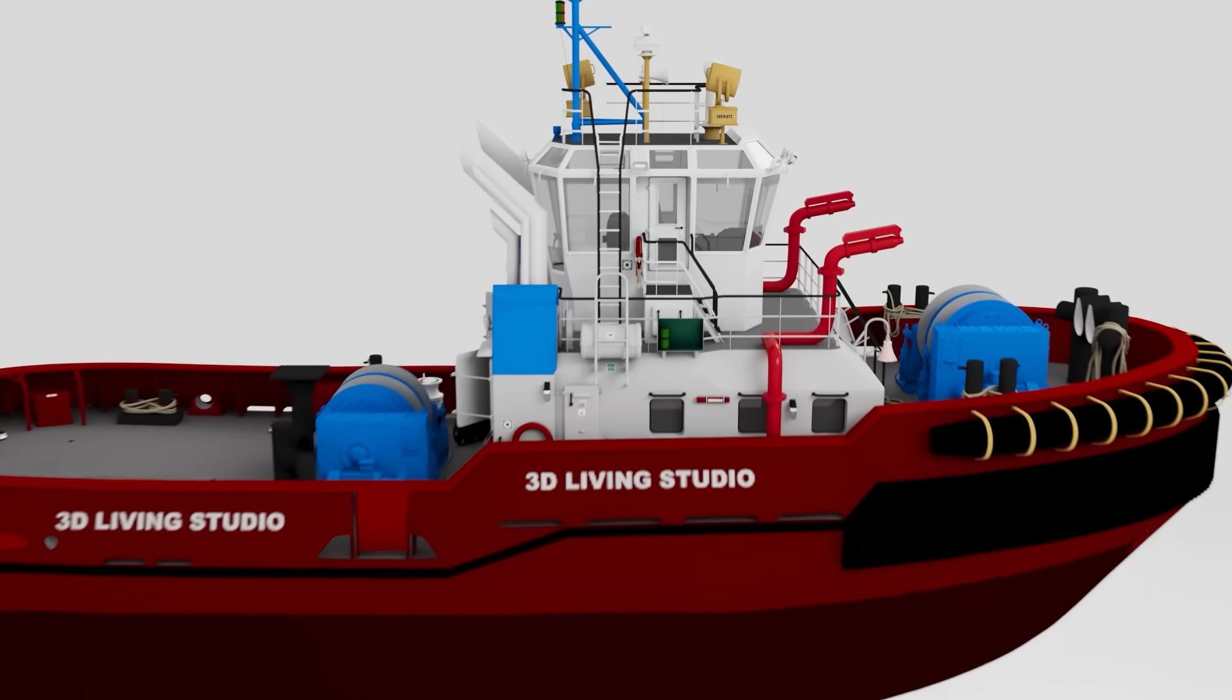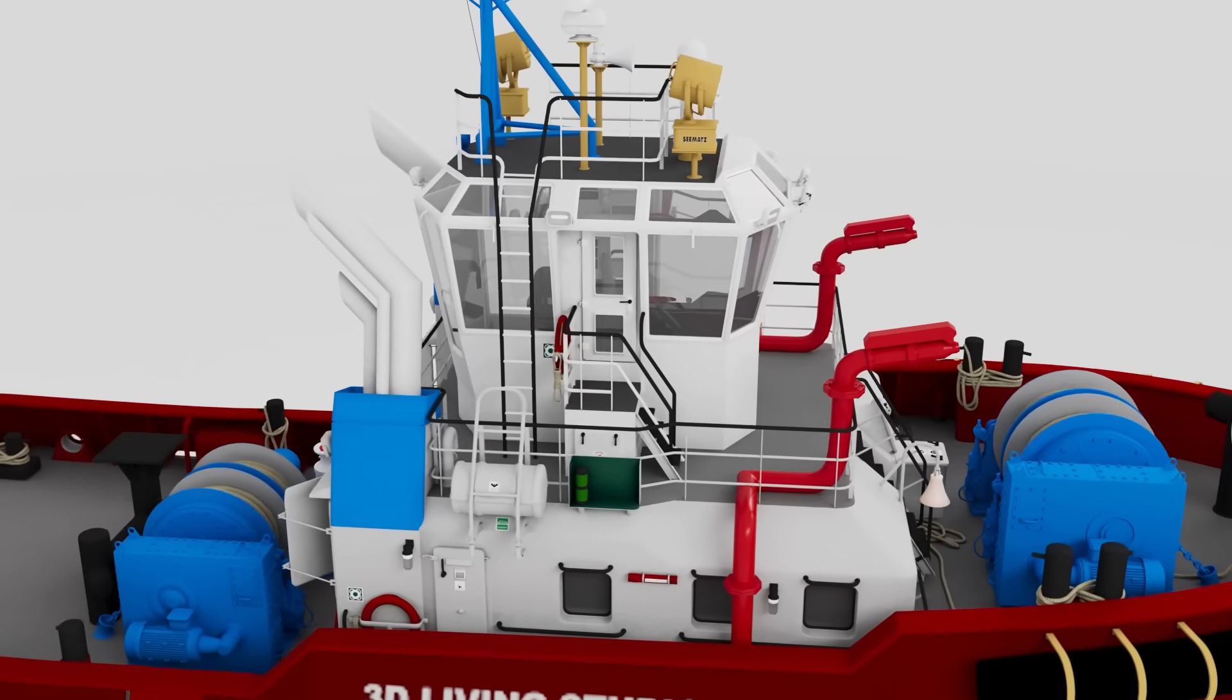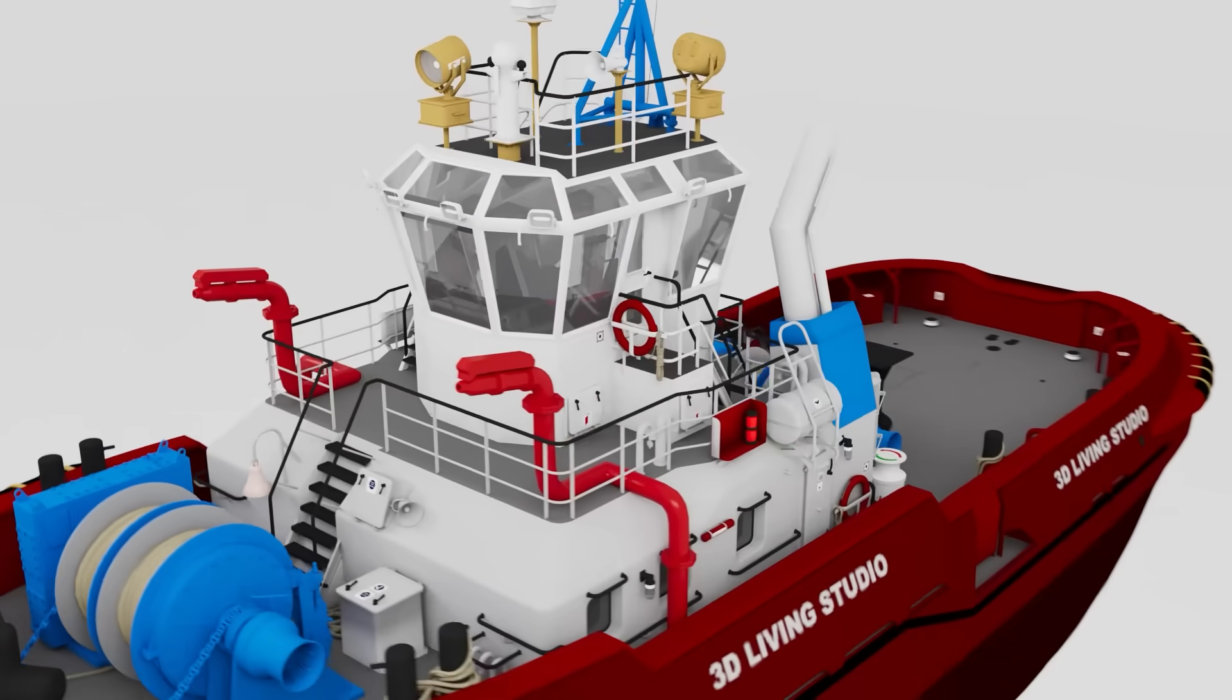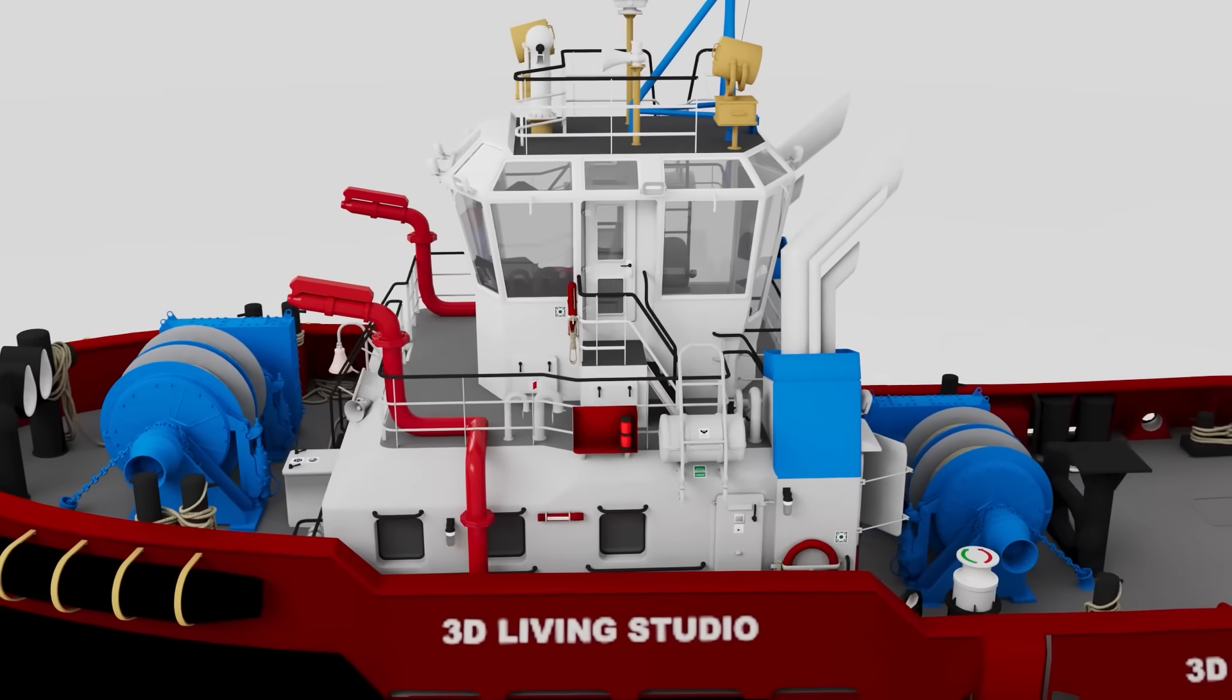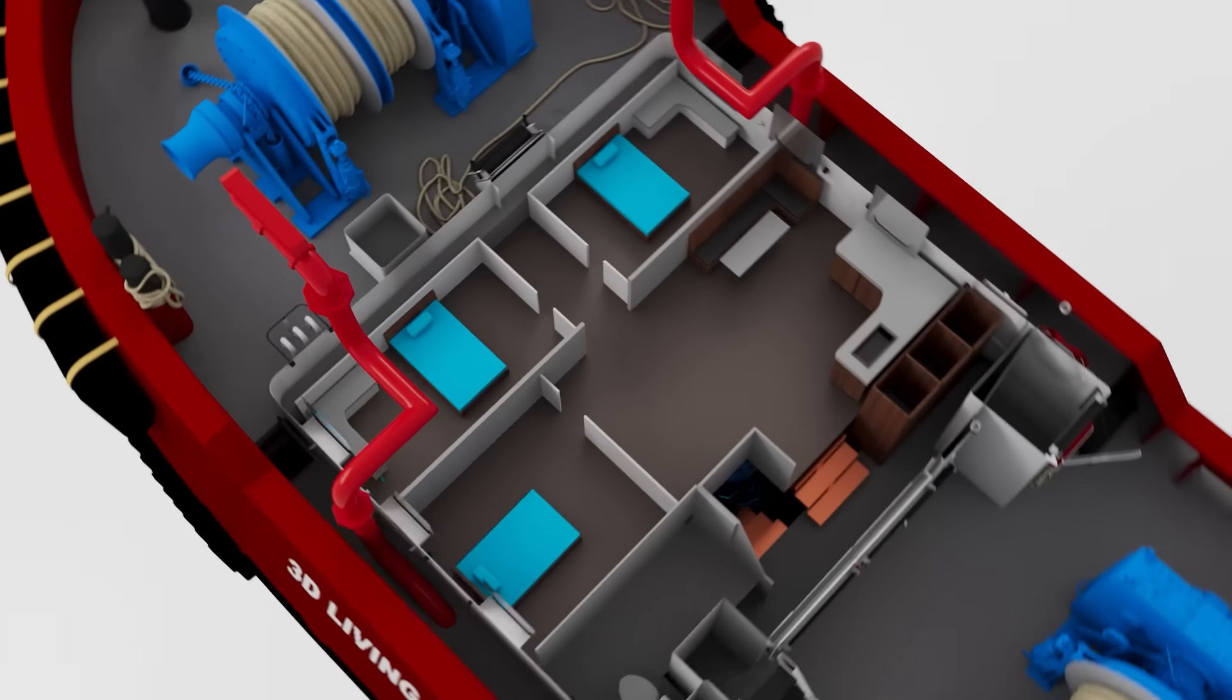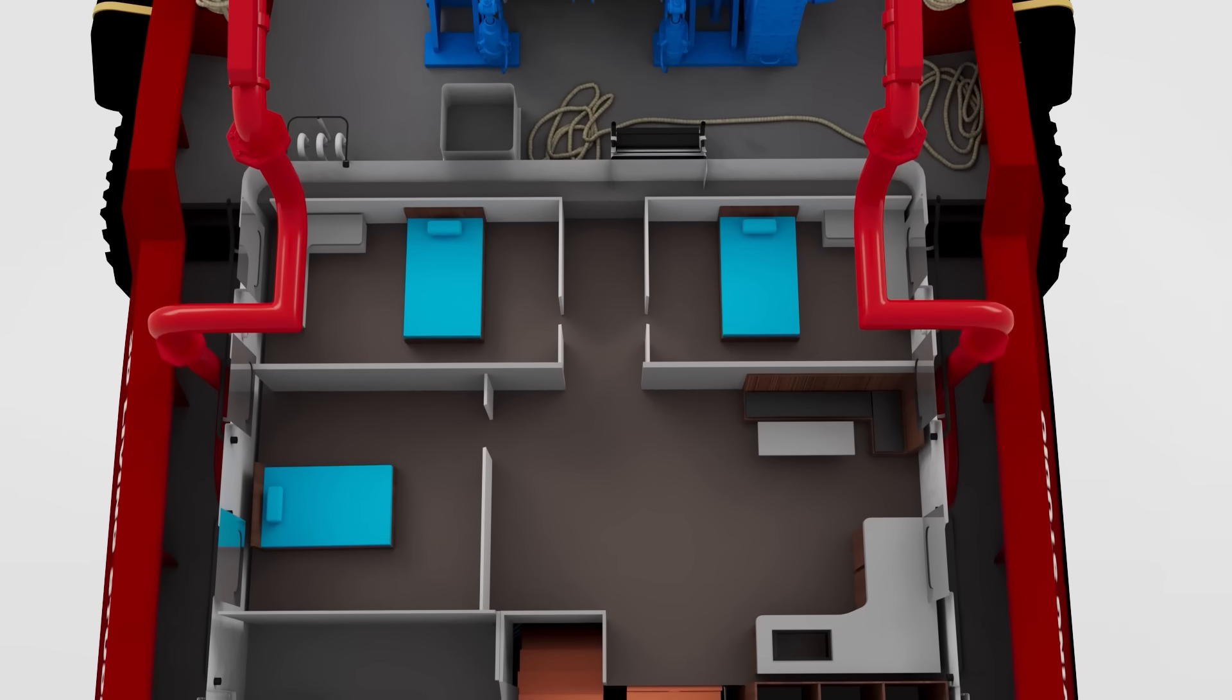On top is a wheelhouse. This spot gives captain and crew a clear visibility of everything around the boat. Beneath the wheelhouse is the crew accommodation. It's a compact but functional home for the crew during their time at sea.